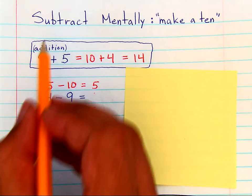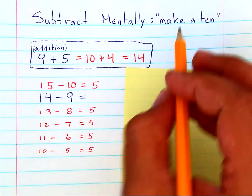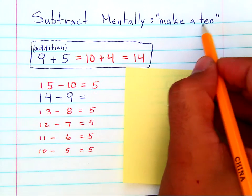This chapter talking about subtracting mentally has a couple of different strategies, one of which is to make a 10.